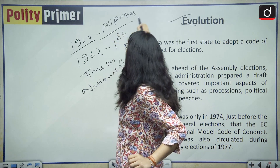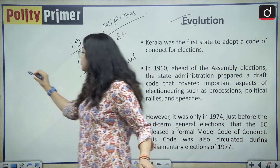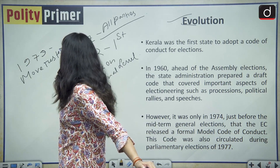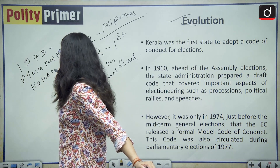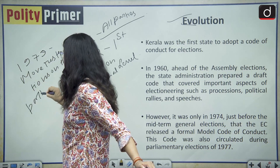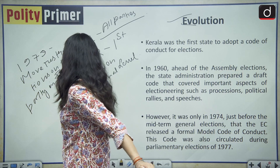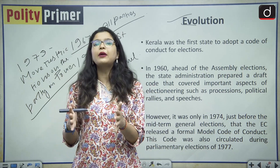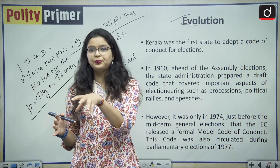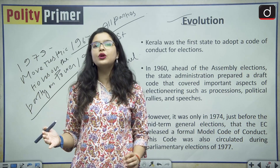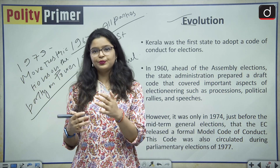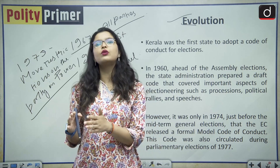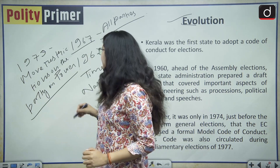In 1967, all parties ratified the Model Code of Conduct. Then in 1979, the Election Commission decided to place more restrictions on the party in power to prevent corrupt practices. These restrictions were aimed at ensuring the ruling party could not exploit its official position or misuse its strength during elections.